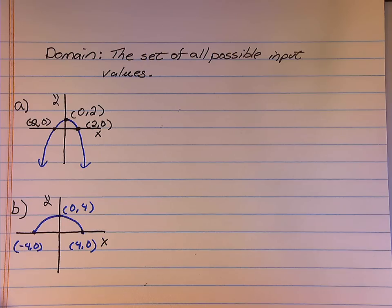Domain is the set of all possible input values. I'm going to give you two examples from a graph: Graph A and Graph B.